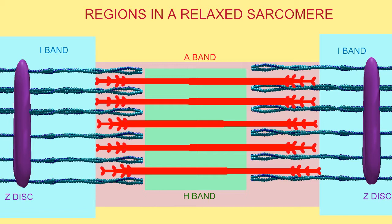And in both, there is an M-line, where the myosin-thick filaments are attached and supported by the protein myomesin.